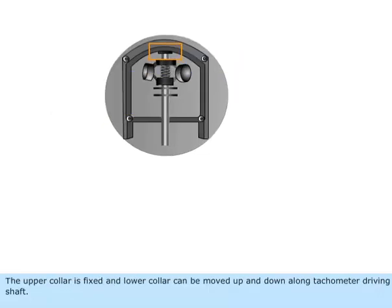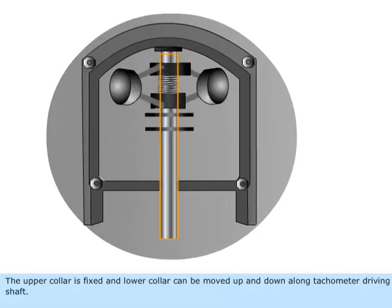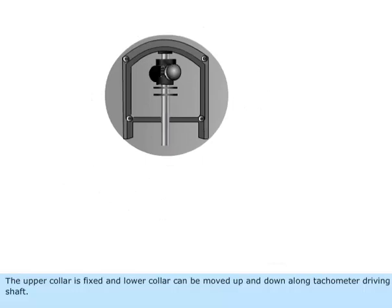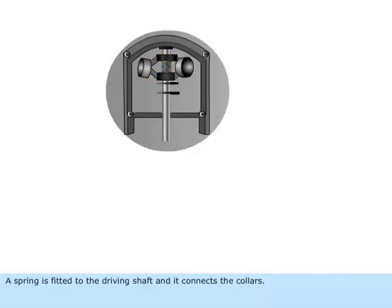The upper collar is fixed and lower collar can be moved up and down along tachometer driving shaft. A spring is fitted to the driving shaft and it connects the collars.